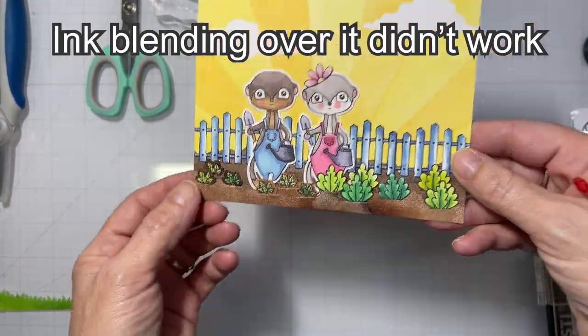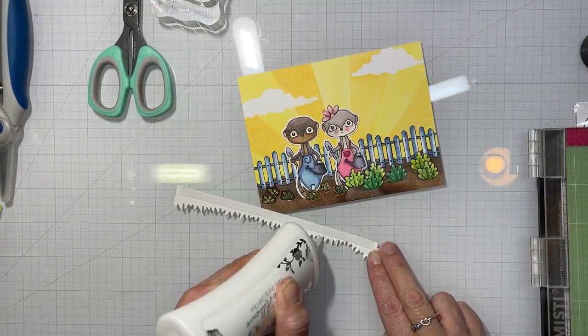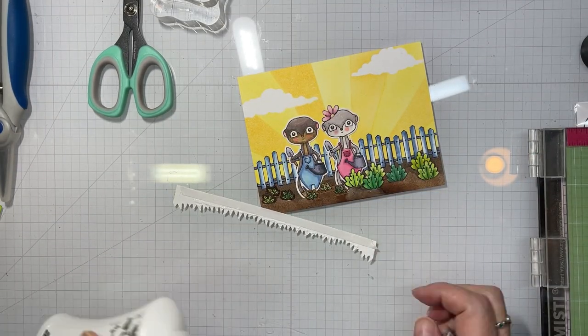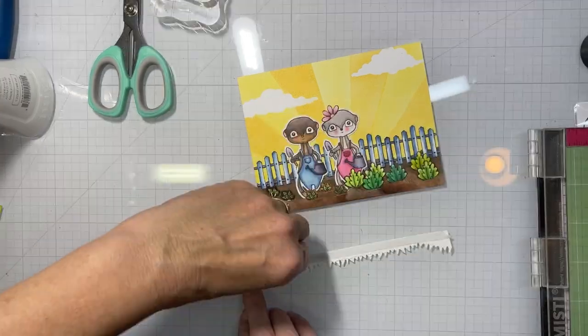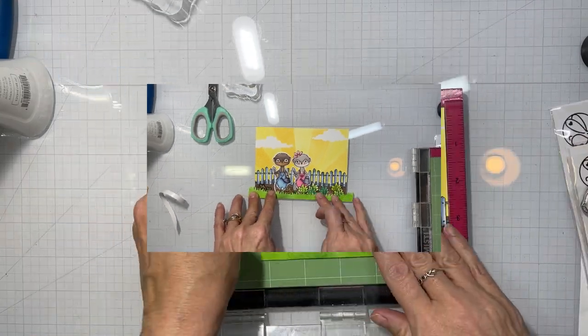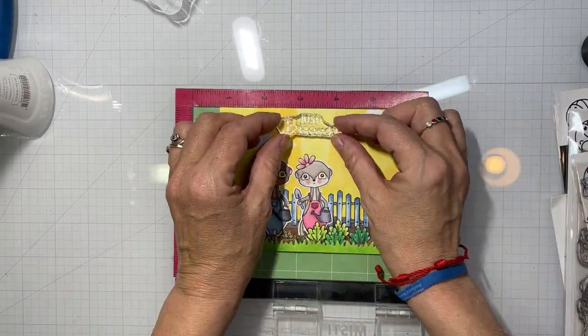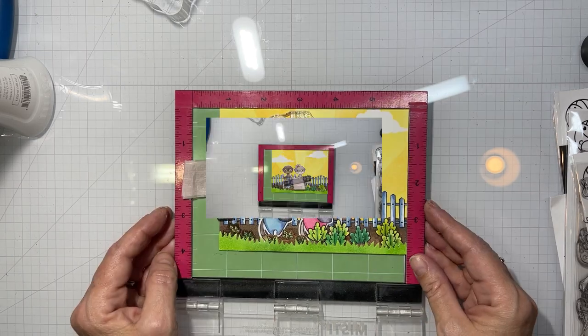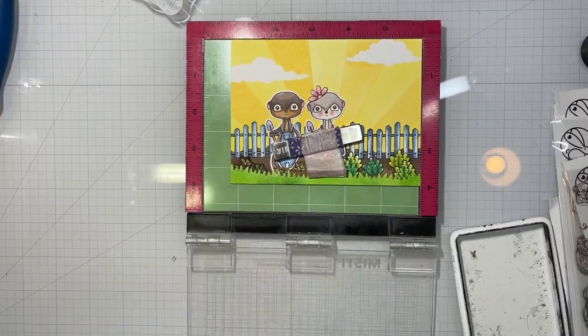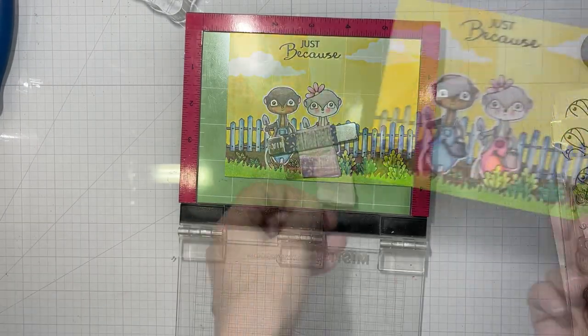So I ended up putting a layer of grass down there and adding more plants to the area just to cover it up. But it worked out. I was able to cover it. I'm not going to throw a card panel away after working on it this hard. So I love the kids to death, but sometimes they just frustrate me so.